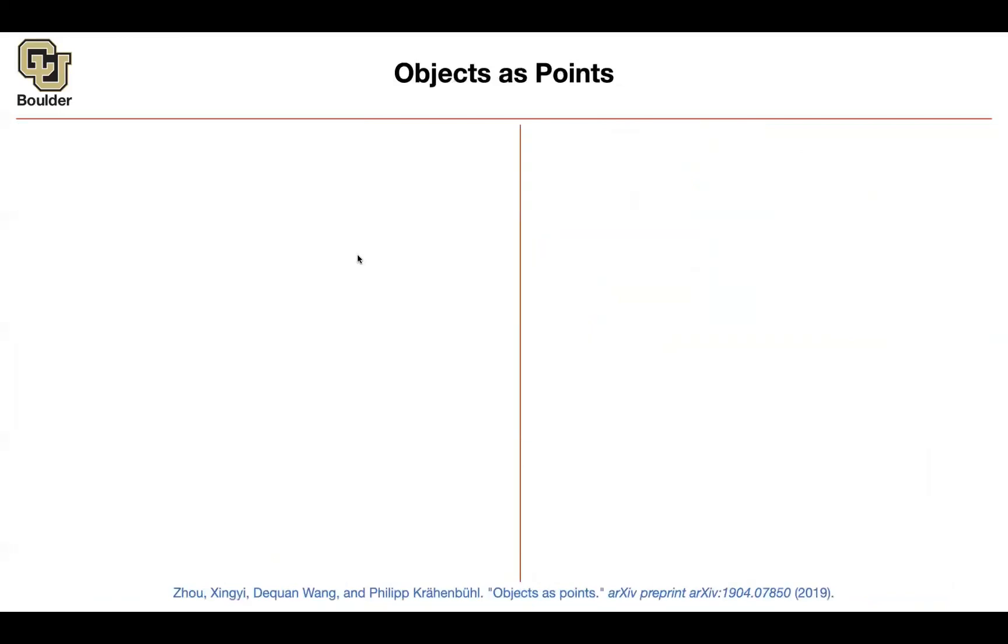Let's move on to objects as points. The method is going to be called CenterNet. This one is also anchor-free. It's about key point estimation, which is a per-pixel prediction task.